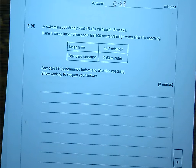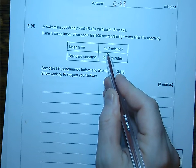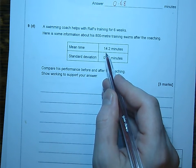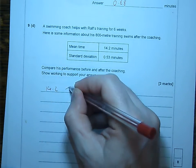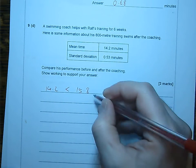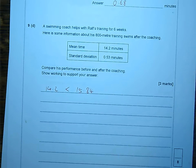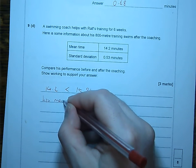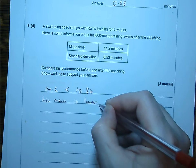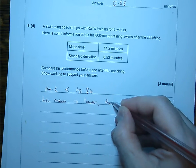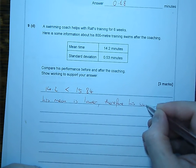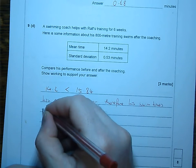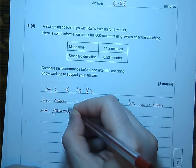That working bit kind of threw me initially because, well, what work do you need to do to show that 14.2 is less than 15.8? I mean, 14.2 is less than 15.8. Or 15.84 if you want. His mean is lower. Therefore, his swim times are generally faster.